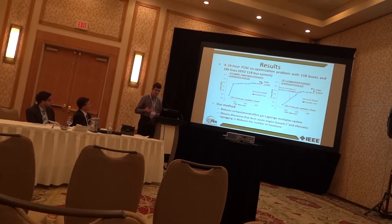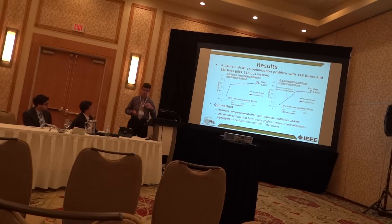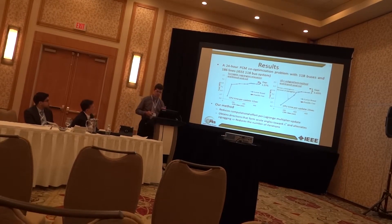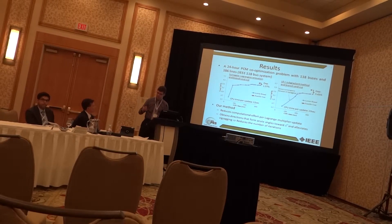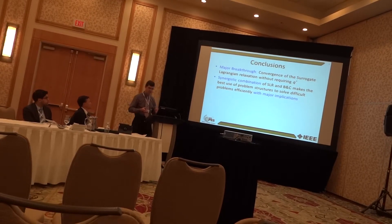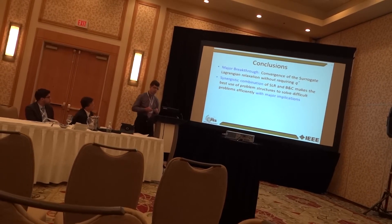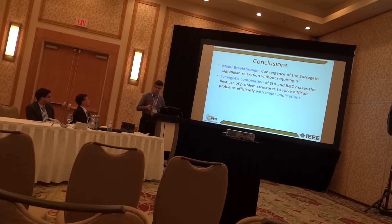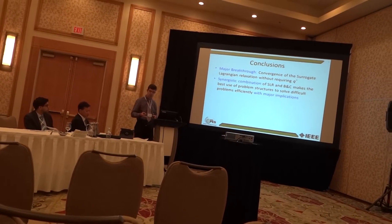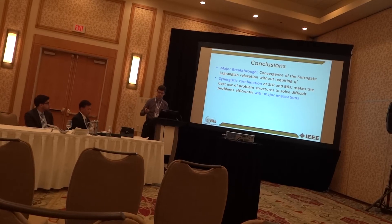This improvement occurs because our novel method reduces computational effort and also obtains directions that are smoother compared to the subgradient directions. This reduces the number of iterations required for convergence. To conclude, the major breakthrough is the convergence proof of the surrogate relaxation method without requiring the optimal dual value and without optimizing the relaxed problem exactly. This is important because we can synergistically combine this novel method with branch-and-cut to make best use of problem structures, such as separability and linearity, to efficiently solve problems in power systems and in many other important areas.